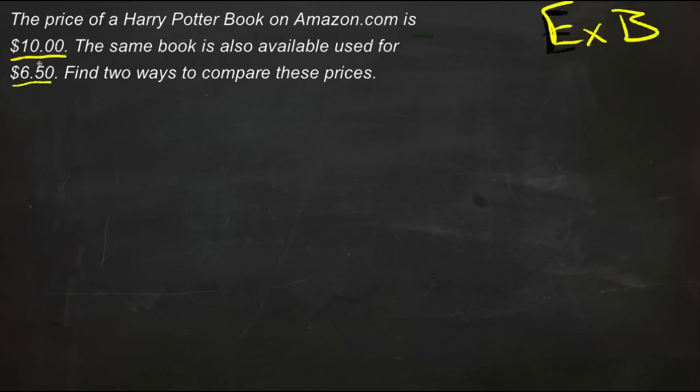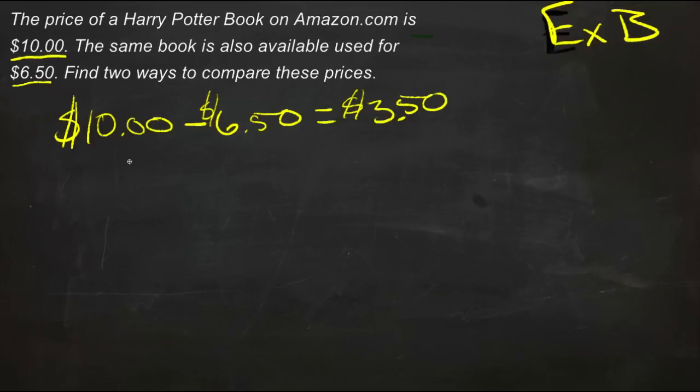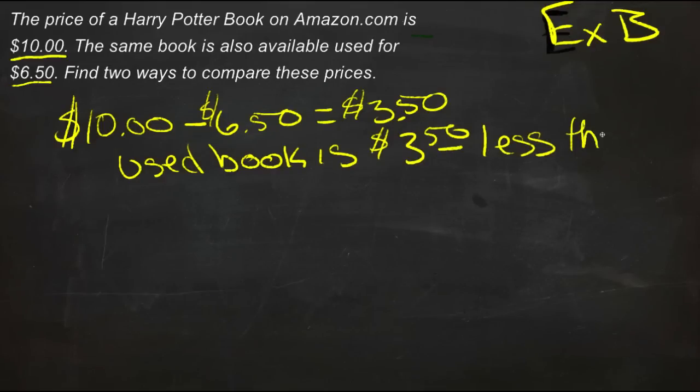Obviously one way would be to compare the prices directly. If the new one is $10 and the used one is $6.50, we could just subtract them. $10 minus $6.50 is $3.50. So we could say that the used book is $3.50 less than the new one.